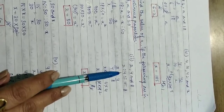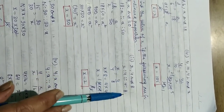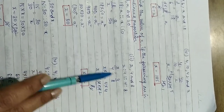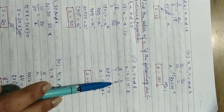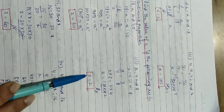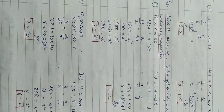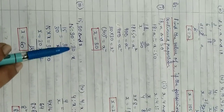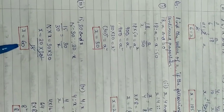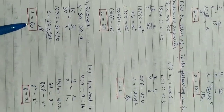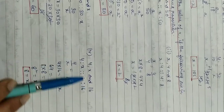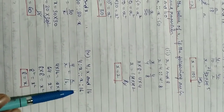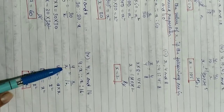Second part: x, 4, 8. The middle term is 4, so we write x by 4 equals 4 by 8. This gives 4 times 4 equals x times 8, so x equals 2. Third part: repeat 30 two times and calculate x similarly.